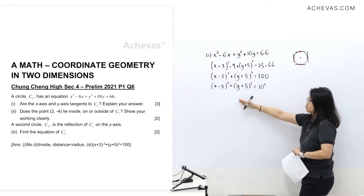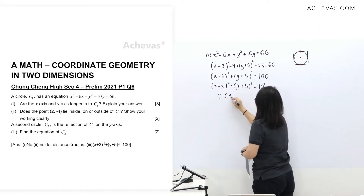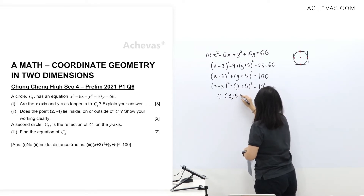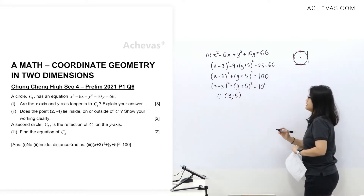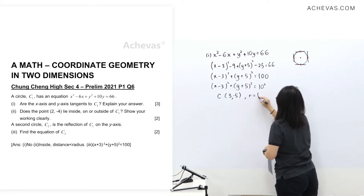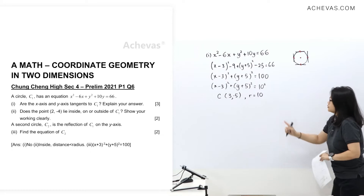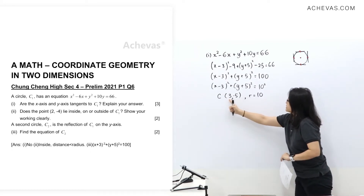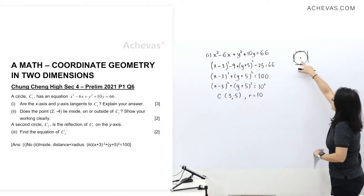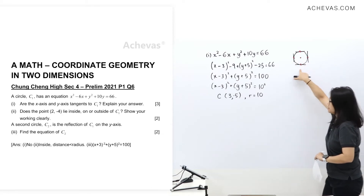I'm going to write down two pieces of information from here. First, the center of the circle, and second, the radius. Using this information, I can find the four cardinal points on the circle.